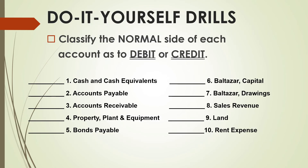Now we proceed with our do-it-yourself drills to practice whether you are able to grasp the theories about the rules of debit and credit. Instruction: classify the normal side of each account as to debit or credit. Again, the normal side is the side of the account you use to increase it.